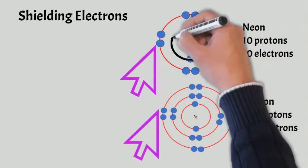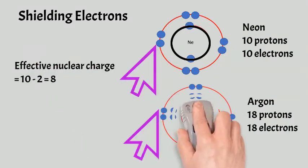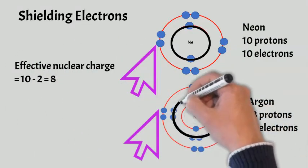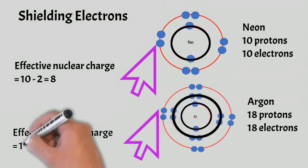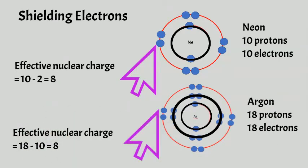And argon has got eight electrons in the outermost shell, and so it's got 10 shielding electrons. So both neon and argon have an effective nuclear charge of eight. The effective nuclear charge is the number of protons minus the number of shielding electrons. So that's a huge nuclear attraction on those outermost electrons, because you have the minimum number of shielding electrons.